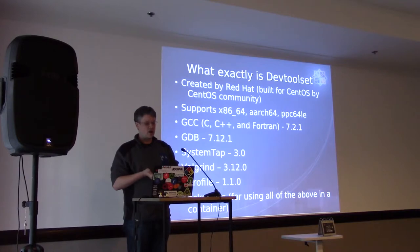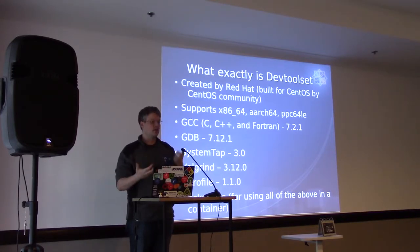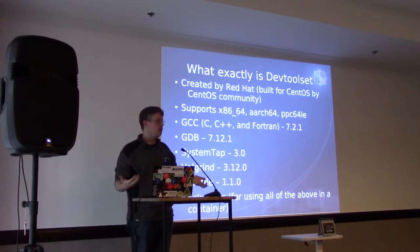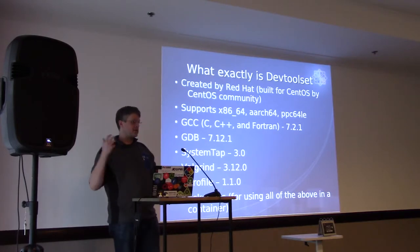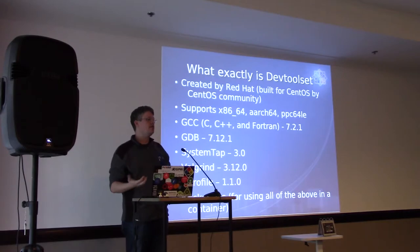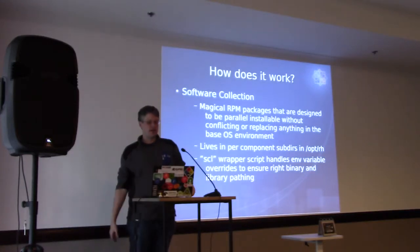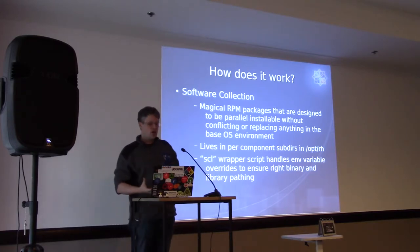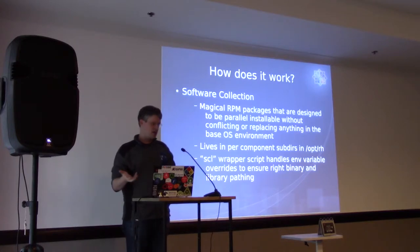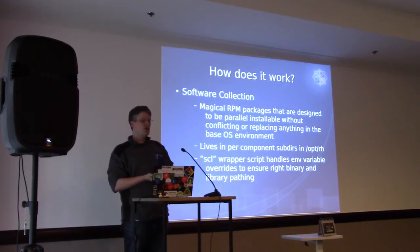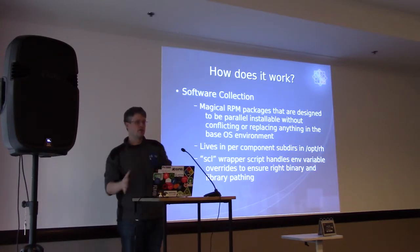It supports i686, x86-64, ARM64, and PPC64-LE. What it is is a collection of open source packages around compilation and development, specifically so you can get newer versions of debuggers and compilers and tools like Systemtap, Valgrind, and NodeProfile. It also includes Dockerfiles so you can inject all of these things directly into containers. It works using a framework called Software Collections — magic RPM packages designed to be parallel installable without conflicting or replacing everything in your environment. You can install these packages and they drop into /opt/rh and never conflict with any libraries or binaries on your system. You can have the DevToolset GCC and the system GCC and they both live in harmony.